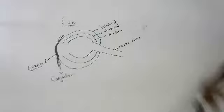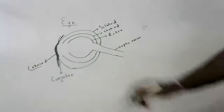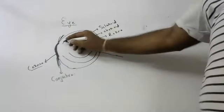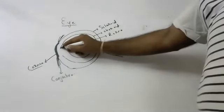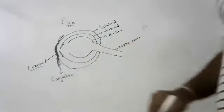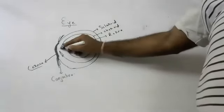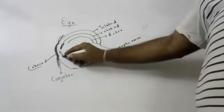Next thing, the choroid layer in the front forms the iris. Choroid layer in the front forms the iris.